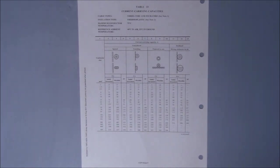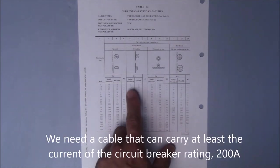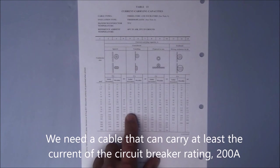We said earlier that the circuit breaker we were using to protect this circuit was 200 amp. So now I need to find a cable that can carry at least 200 amps. A 95mm² cable can carry 213.